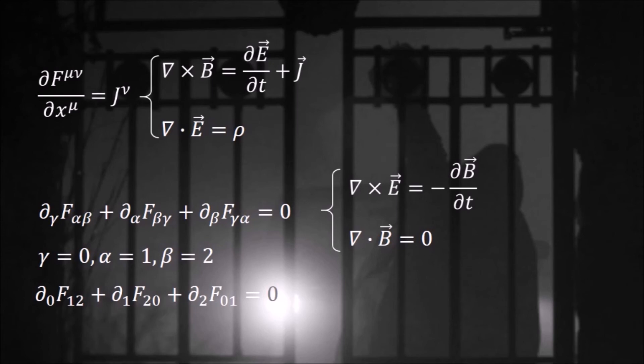Let's try the combination gamma equals to zero, alpha equals to one, and beta equals to two. What you'll get is this, which is nothing but the z component of this Maxwell's equation.